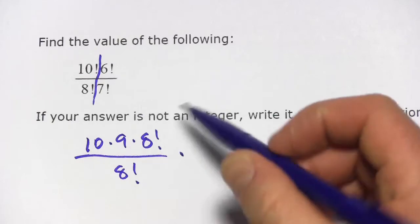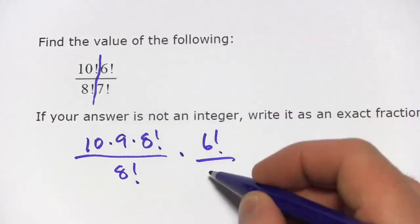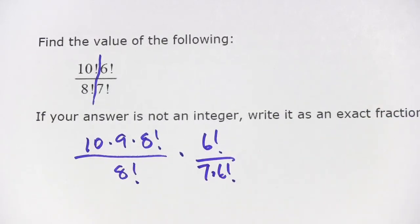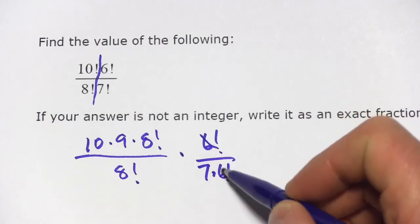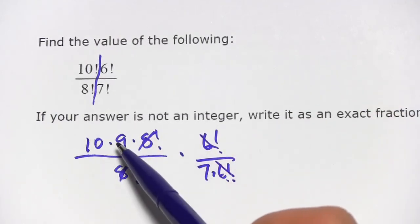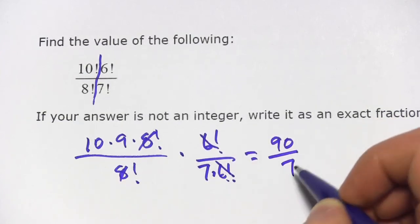And then over here, I've got it a little different. I've got 6 factorial up top. The bottom is bigger. So I can rewrite that as 7 times 6 factorial. So this will cancel and these will cancel. And what I get is 10 times 9 over 7. So this is 90 sevenths.